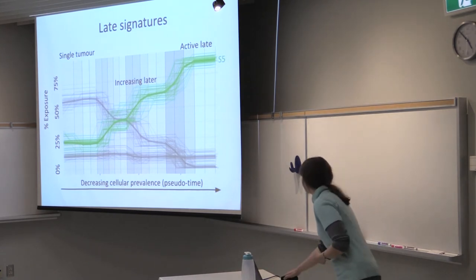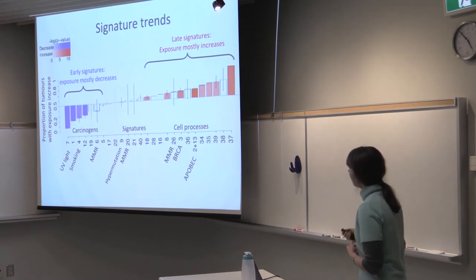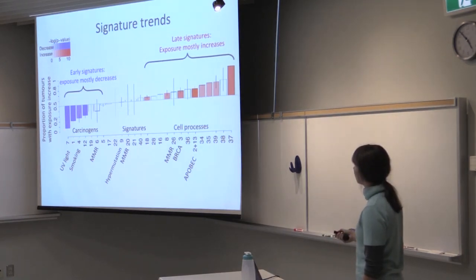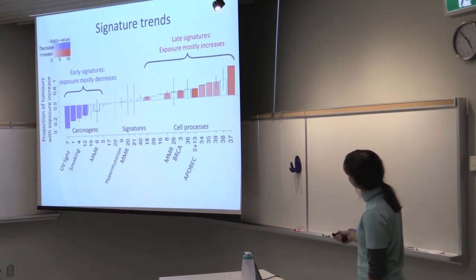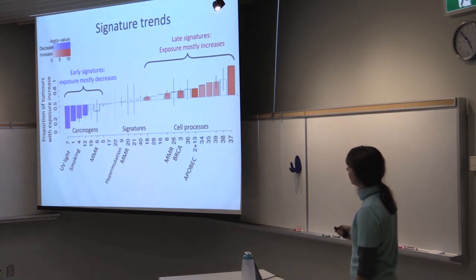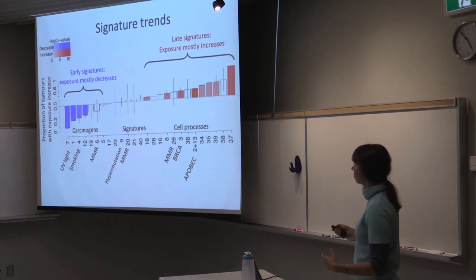And now we can compute the proportion of the tumors where we see the signature to increase. And here, I'm plotting the signatures, and on the y-axis, it's the proportion of the tumors with this signature increasing. And on the left, then we see the early signatures, so those whose exposure was mostly decreasing over time.